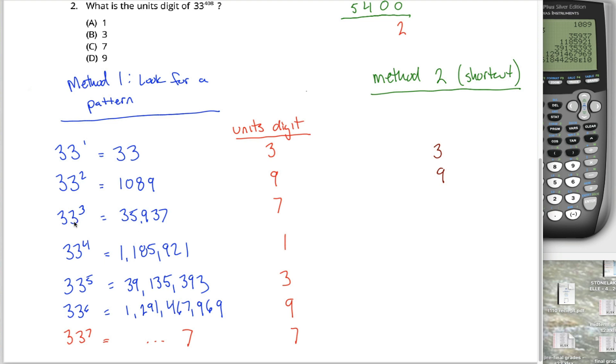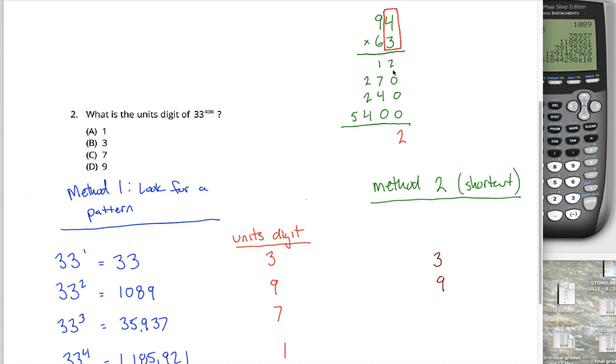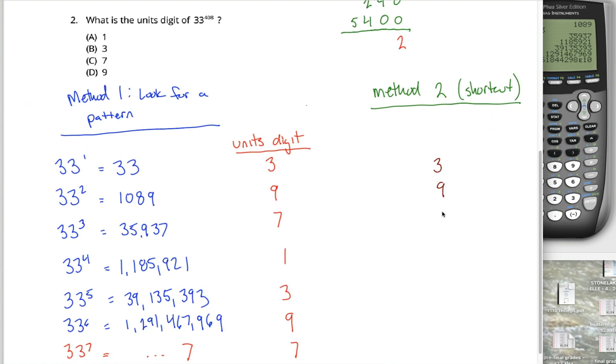What about 33 cubed? Well, 33 cubed is 33 squared times 33. And I know the unit's digit of 33 squared is a nine. And the unit digit of 33 is a three. And nine times three is 27. If I were doing this algorithm, I'd write 27 here instead of 12. But I don't care about the 20 part of it. I only care about the seven part of it. When I figured out my final answer, I'd have the seven from 27 and a whole bunch of zeros. I'd get a seven down here. What I'm saying is the unit's digit of 33 to the third power must be a seven.